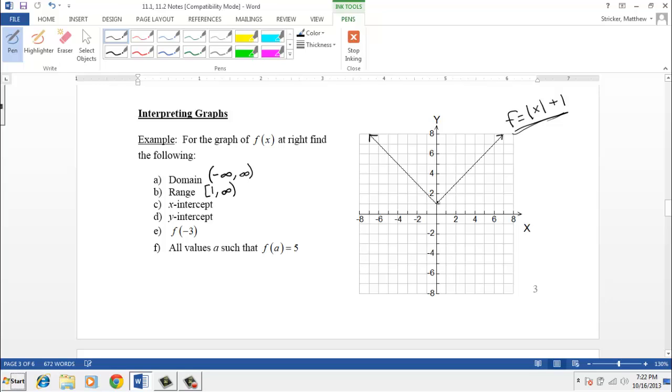Are there any x-intercepts here? Does it ever cross the x-axis? The answer there is there's no x-intercepts. What about the y-intercepts? Are there any y-intercepts? Well, yeah, there's one place where it crosses the y-axis, that's the vertex. The y-intercept is the point zero, one.